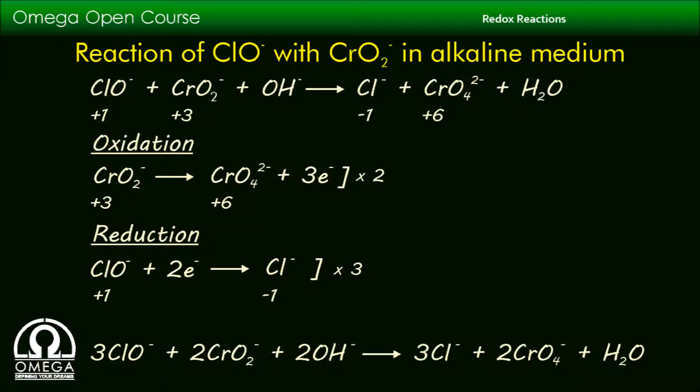Now our reaction is balanced and the balanced chemical equation is: 3ClO⁻ + 2CrO₂⁻ + 2OH⁻ → 3Cl⁻ + 2CrO₄²⁻ + H₂O.